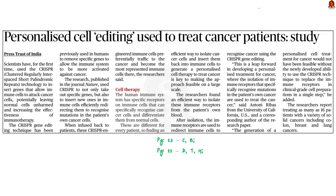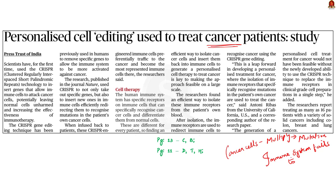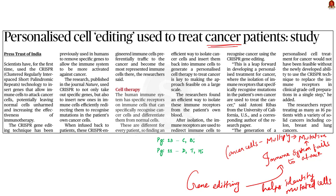The next article is about the development of personalized cancer treatment using cell editing. The immune cells in our body can naturally detect cancer cells, but cancer cells multiply fast and undergo mutations, compromising our immune system's ability to recognize and attack them. Using gene editing techniques like CRISPR, new genes are added to our body's immune cells so they can better identify mutations in cancer cells. This method of using our own cells to fight cancer is called immunotherapy.